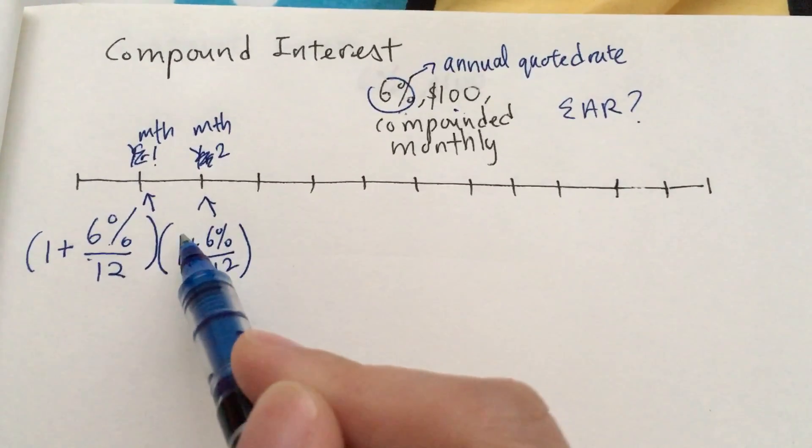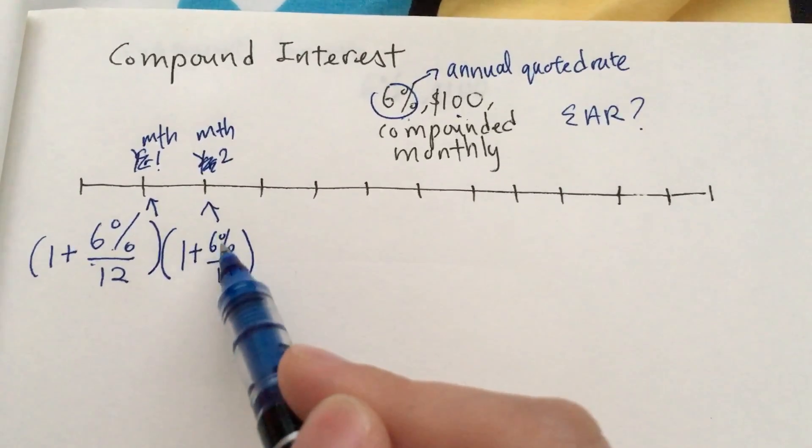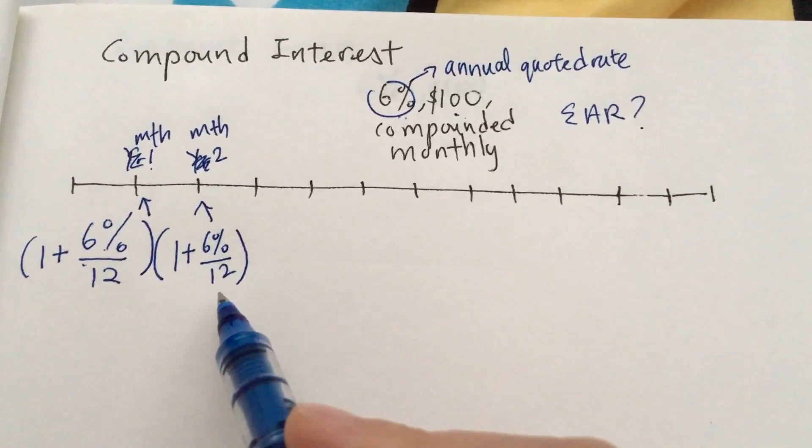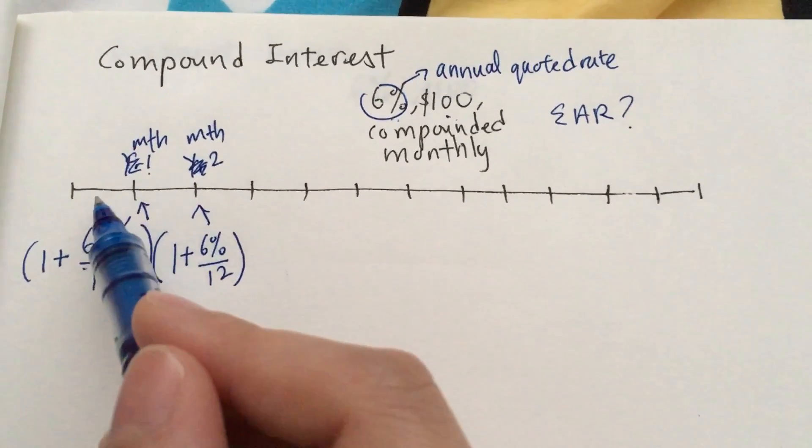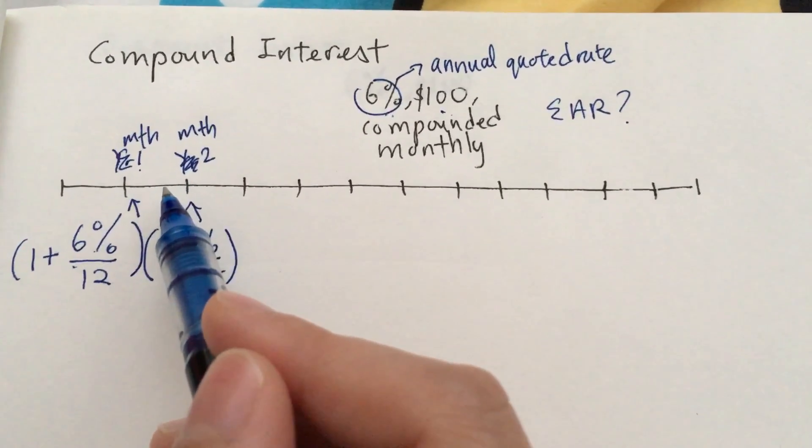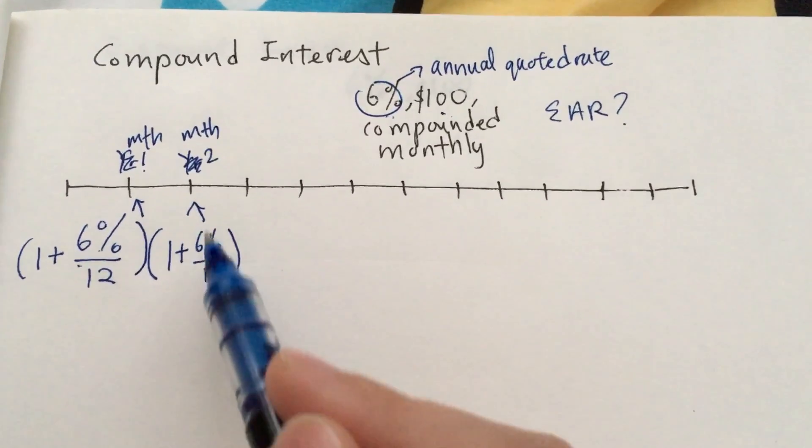Now in the second month, because it's compounding, you will multiply this by another round of 1 plus 6% divided by 12. Because remember, whatever you're incurring in the first month is going to roll over to the second month, and then another round of interest will be applied to it.